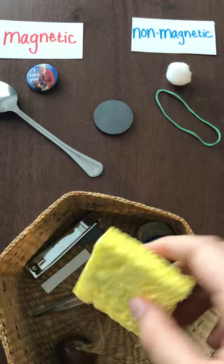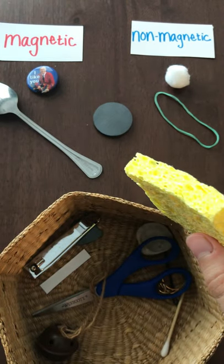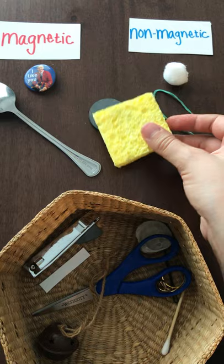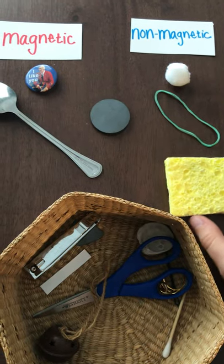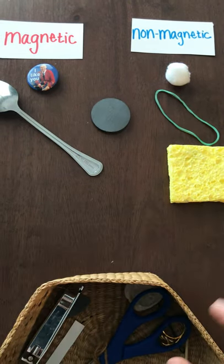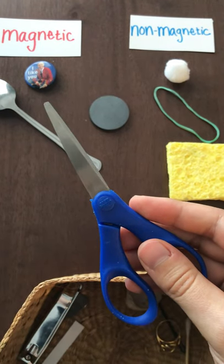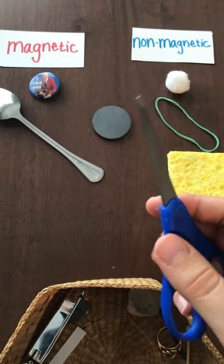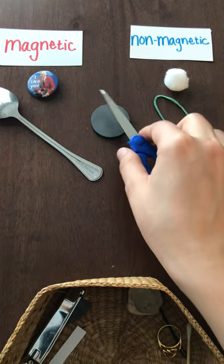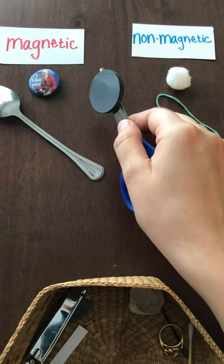Do you think the sponge is magnetic or non-magnetic? It's non-magnetic. Let's see. What about a pair of scissors? Do you think they're magnetic or non-magnetic? Let's see. It's magnetic!